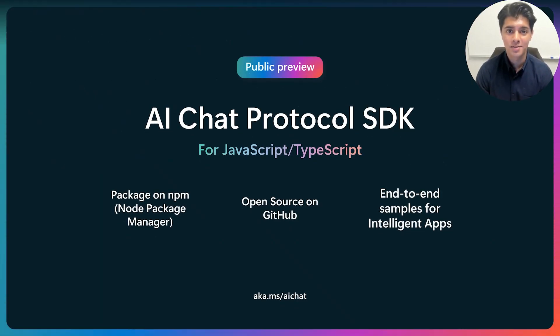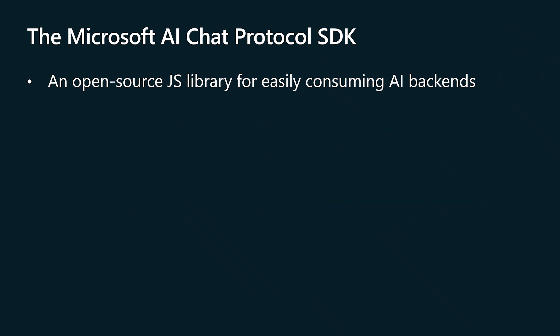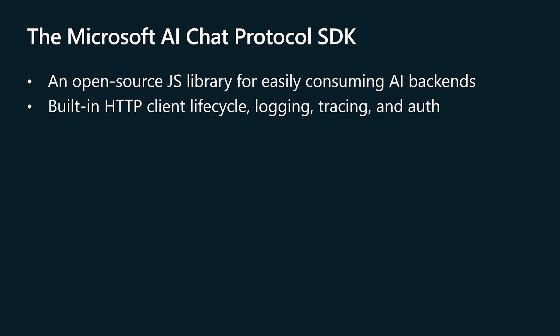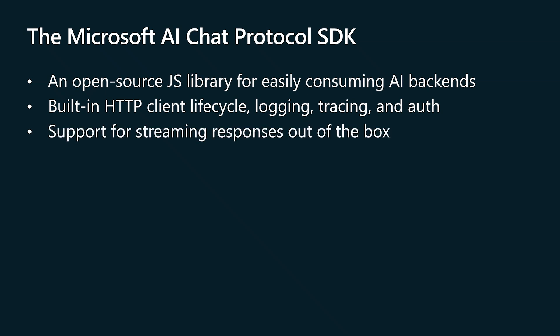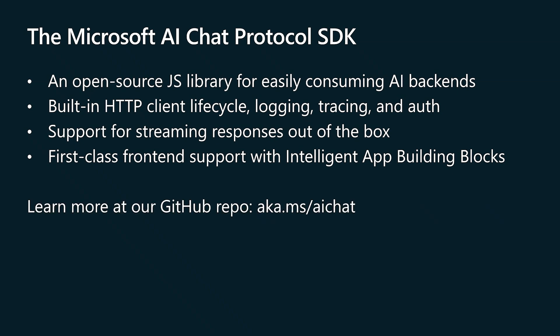Today I'm thrilled to announce the public preview of the Microsoft AI chat protocol SDK. We're published on NPM for JavaScript and TypeScript, we're open source on GitHub, and we have end-to-end samples for your intelligent apps. You can learn more at aka.ms/AIchat. The SDK is an open source JavaScript and TypeScript library for easily consuming AI backends. It comes with core functionality like HTTP client lifecycle management, logging, tracing, and auth, and as long as your middle-tier endpoint adheres to the AI chat protocol API spec, you get support for streaming responses right out of the box.